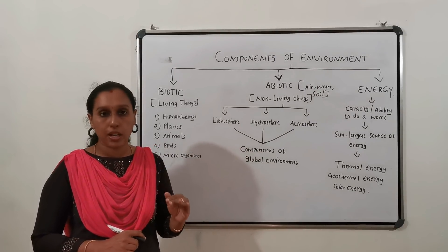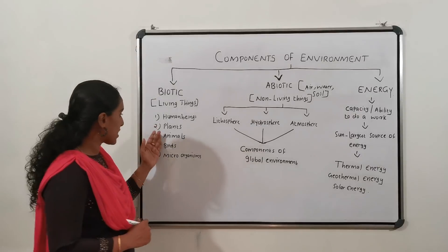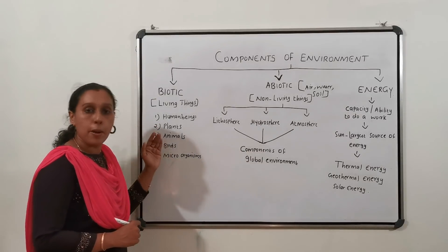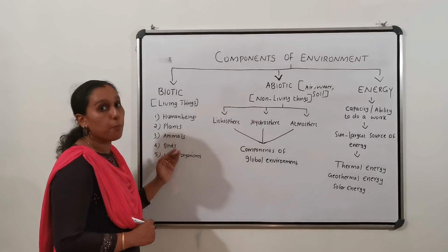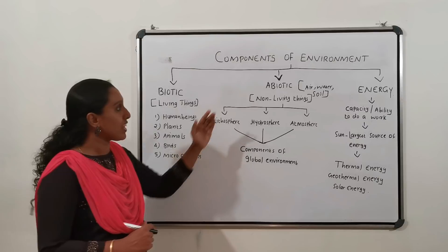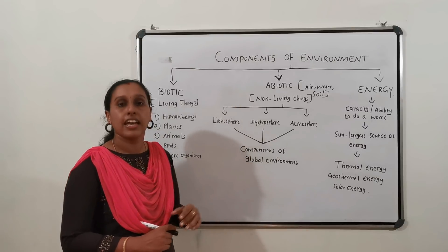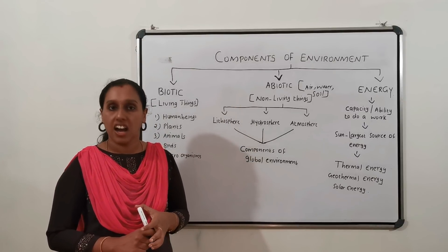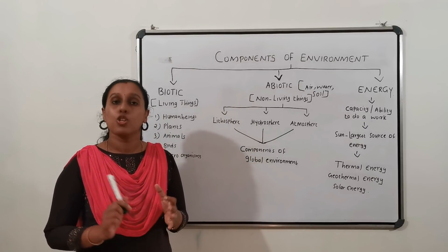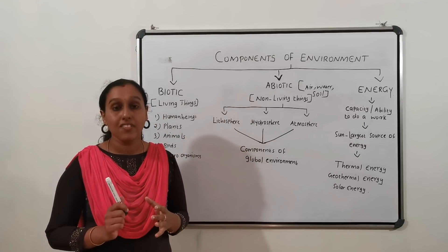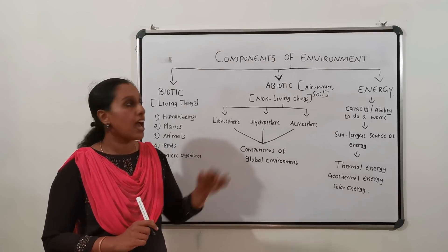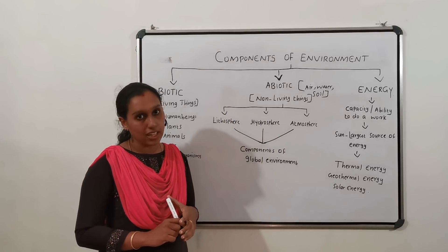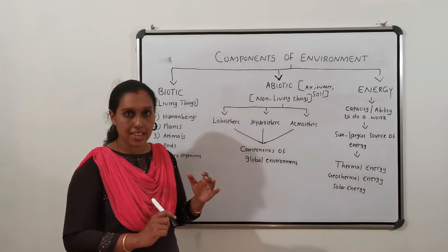Plants, birds, microorganisms — these are examples of biotic elements. We cannot live on earth without abiotic elements.